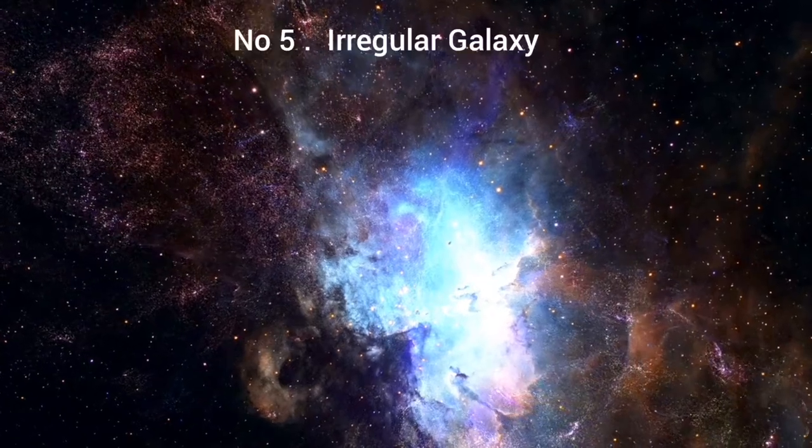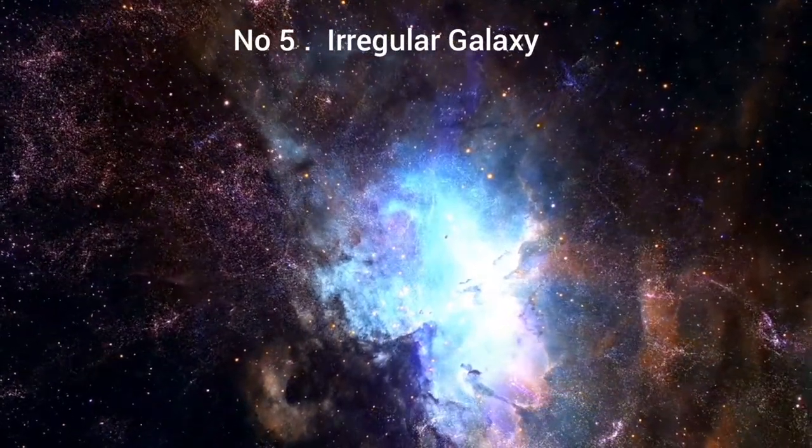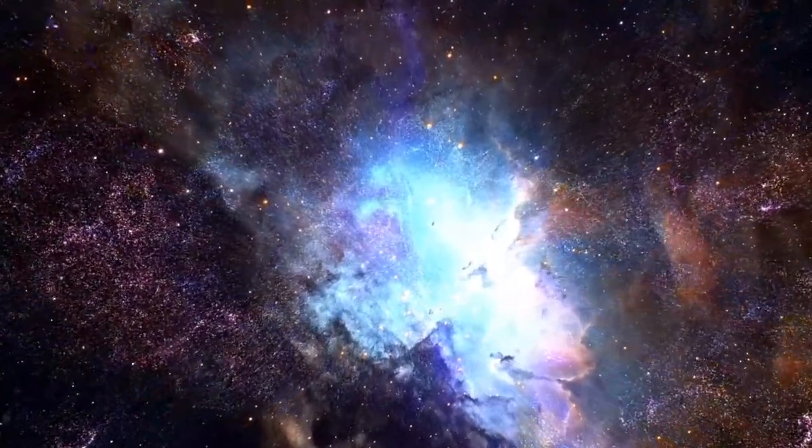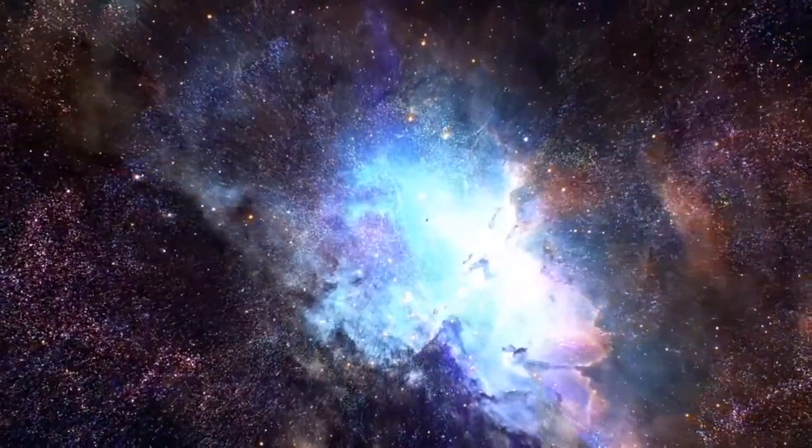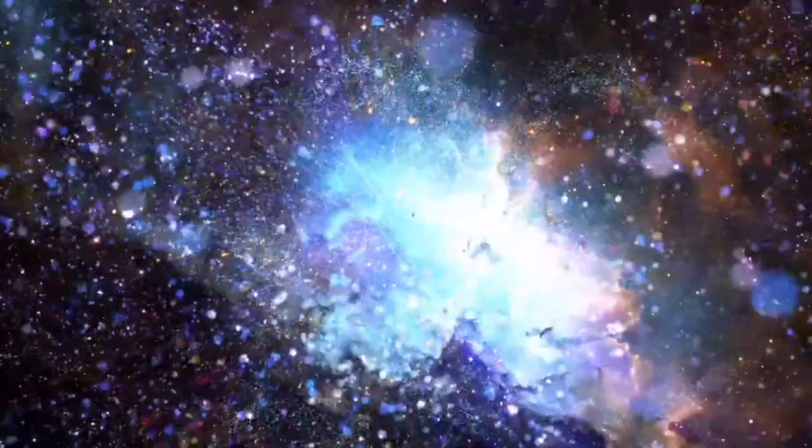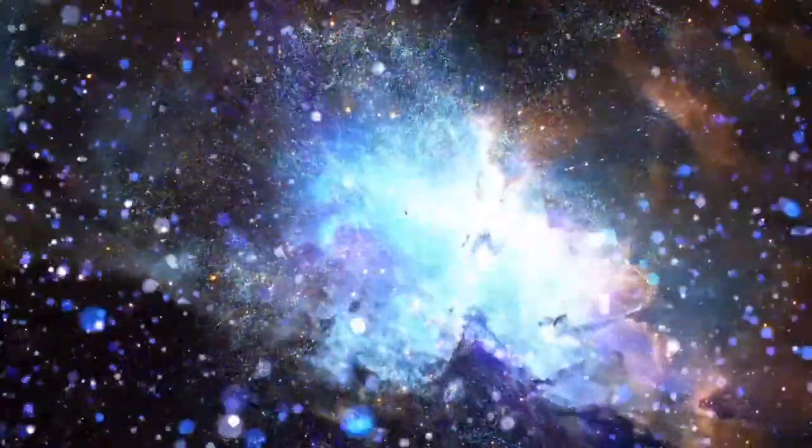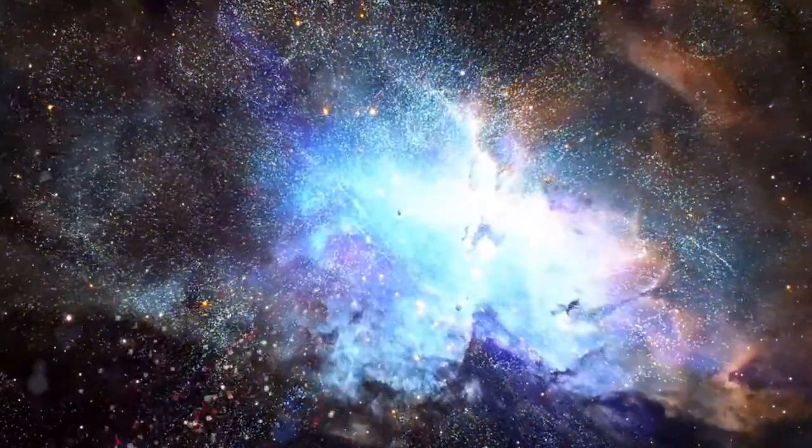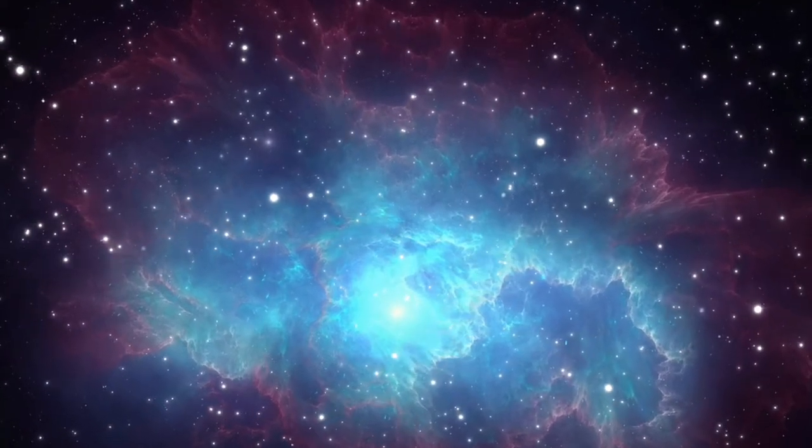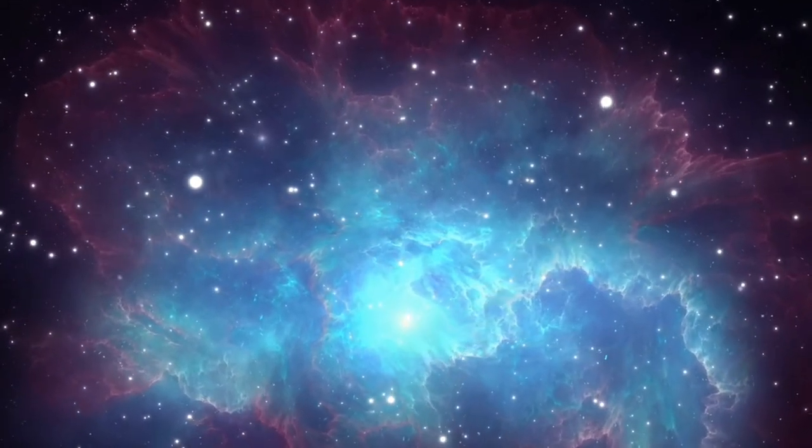Number 5: Irregular galaxy. An irregular galaxy is a galaxy that does not have a distinct regular shape, unlike a spiral or an elliptical galaxy. The large and small Magellanic clouds are examples of irregular galaxies. They are two small galaxies which orbit around our own Milky Way galaxy. About 20 percent of all galaxies are irregulars.